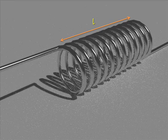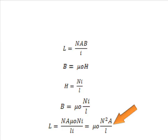Therefore, L equals N into A into μ₀ into N into I divided by l I, equals μ₀ into N square into A divided by l. This is the final expression of inductance of an inductor.